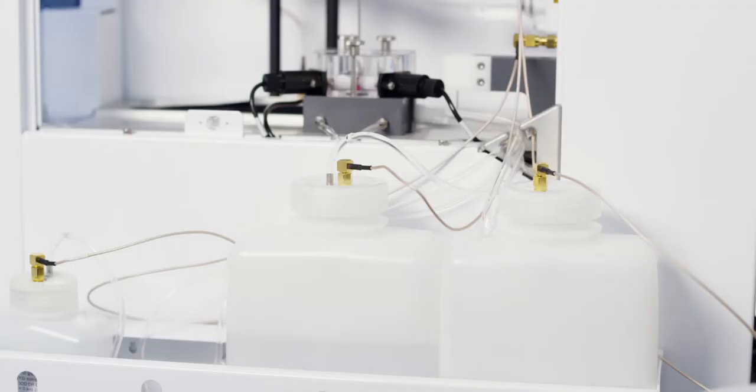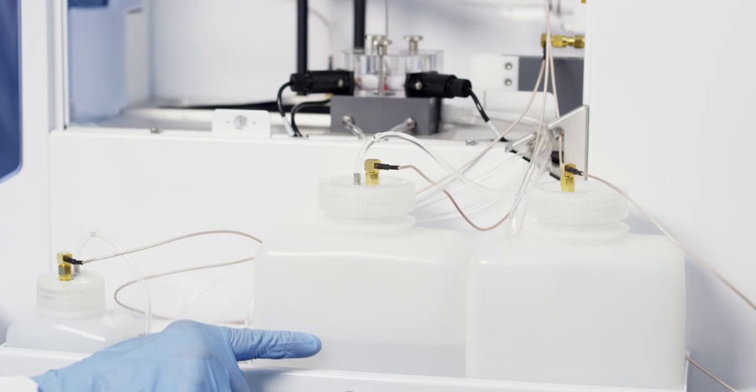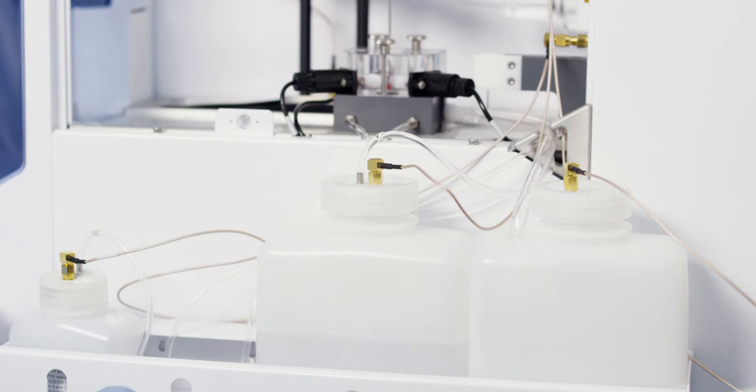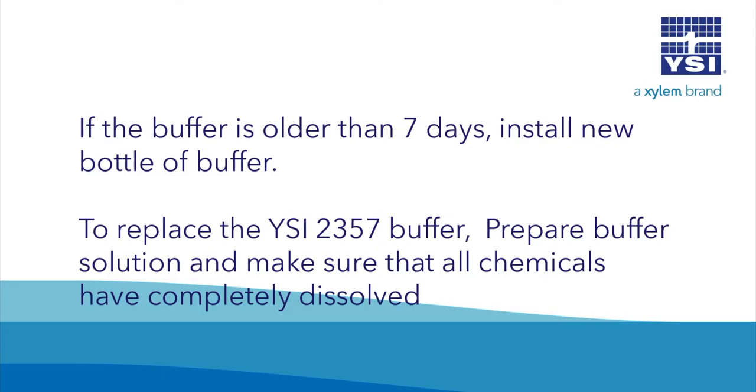The next daily check is to check the buffer bottles. Check the fluid level in the buffer bottles. If the fluid level is low, install a new bottle of buffer. Verify that the buffer has been in the instrument for 7 days or less. If the buffer is older than 7 days, install a new bottle of buffer.